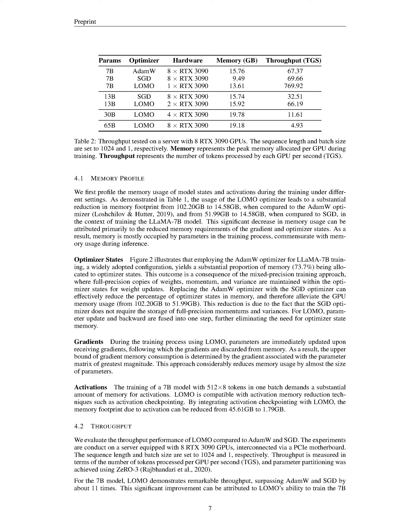By substituting the AdamW optimizer with the SGD optimizer, the portion of memory used for optimizer states decreases significantly, thereby lessening the load on the GPU memory from 102.20 GB to 51.99 GB. The SGD optimizer does not require the storage of full precision momentum and variance, which accounts for this reduction. The LOMO optimizer goes a step further by merging parameter updates and backward passes into a single operation, thus eliminating the necessity for optimizer state memory altogether.